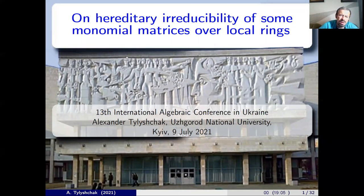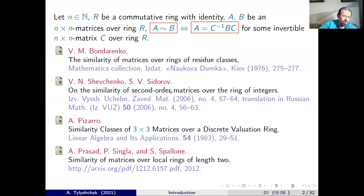I would like to tell about some square matrices over commutative rings. To tell you the truth, the problem of classifying, up to similarity, square matrices over commutative rings with identity which is not a field, is very difficult. In most cases, it is unsolvable because it is wild.